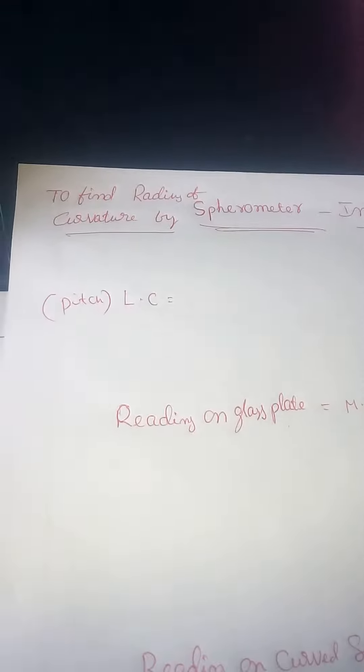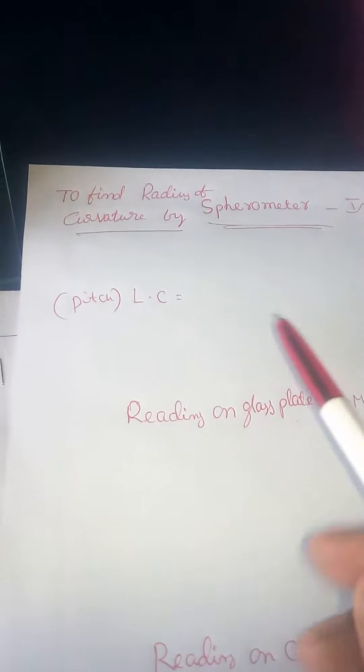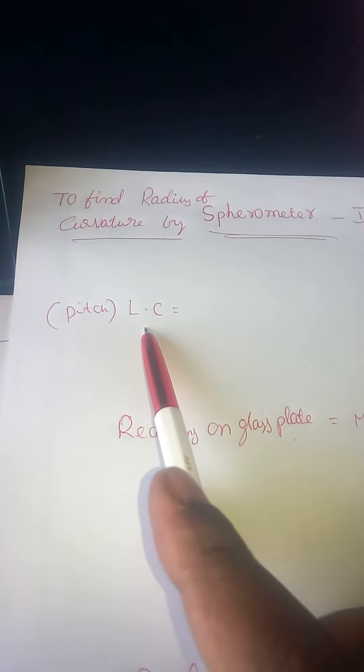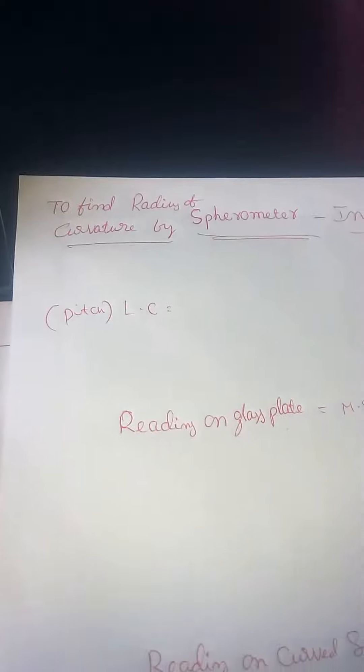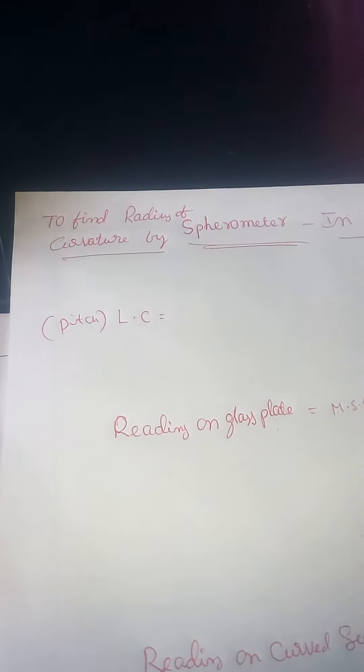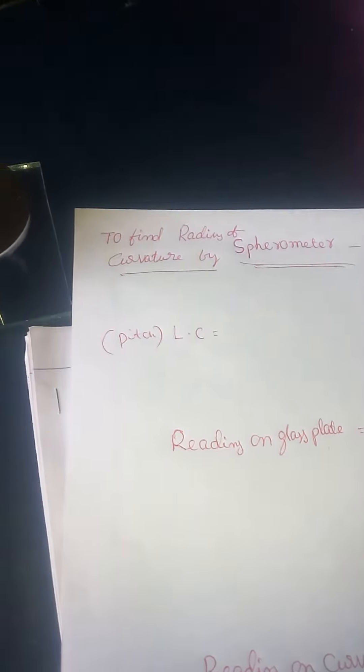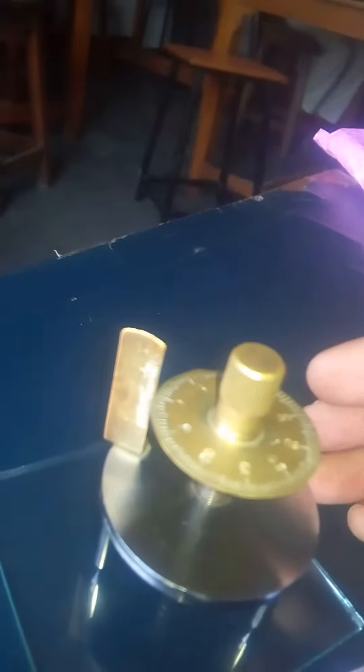How to take the reading — we go for the least count. Generally, in terms of screw gauge and vernier calipers, we are going to learn that. For one rotation, how much distance do we cover? You can observe on the round scale it goes from zero to hundred.